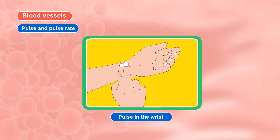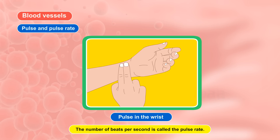Pulse and Pulse Rate. Place your index finger on your right hand on the inner side of your wrist. Can you feel some movements? This is called pulse. Pulse is felt due to the blood rushing in the arteries. The number of beats per minute is called the pulse rate.